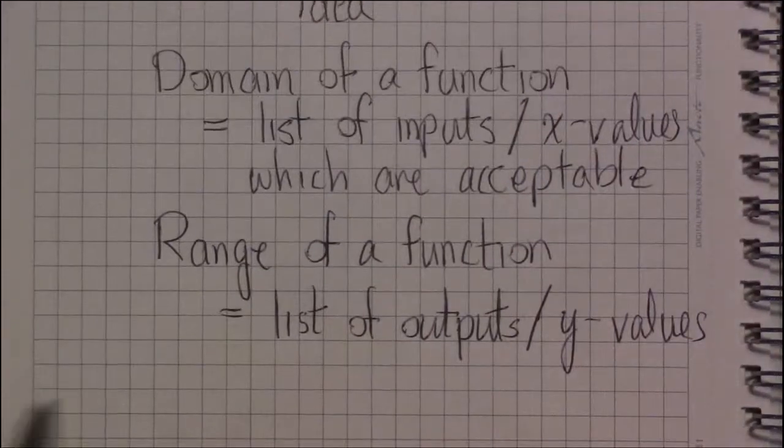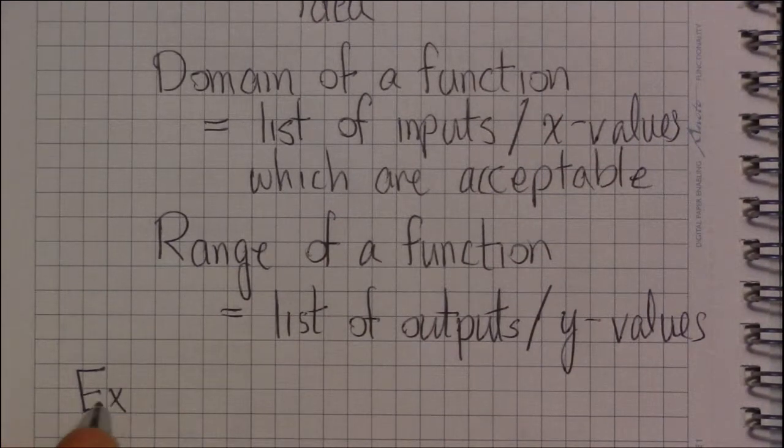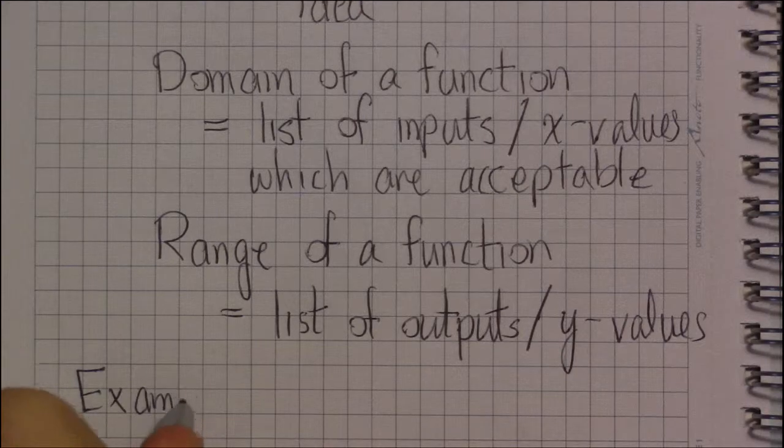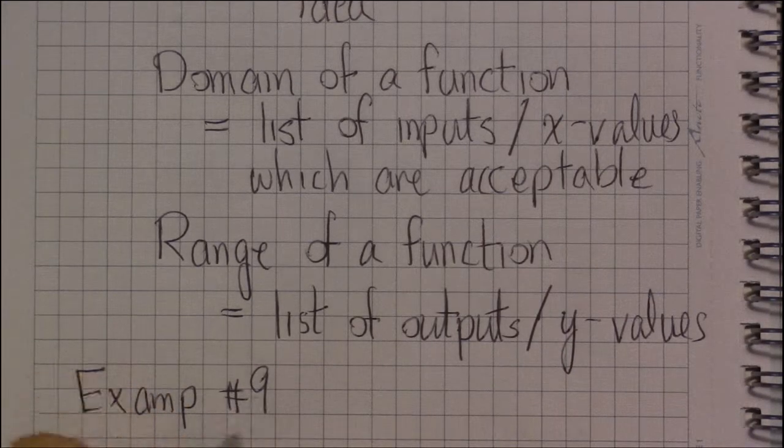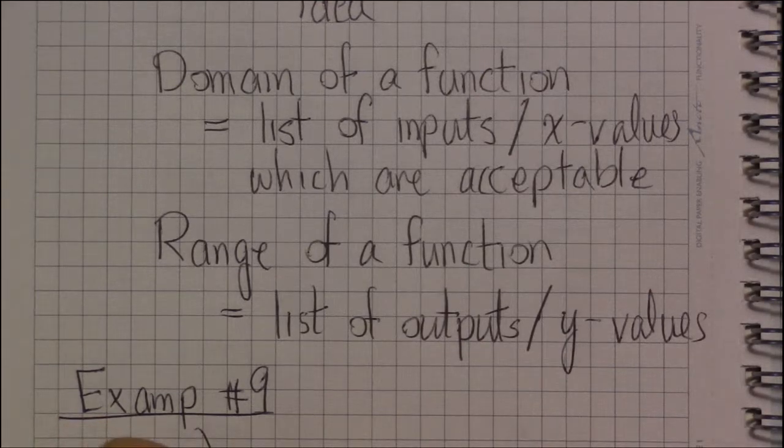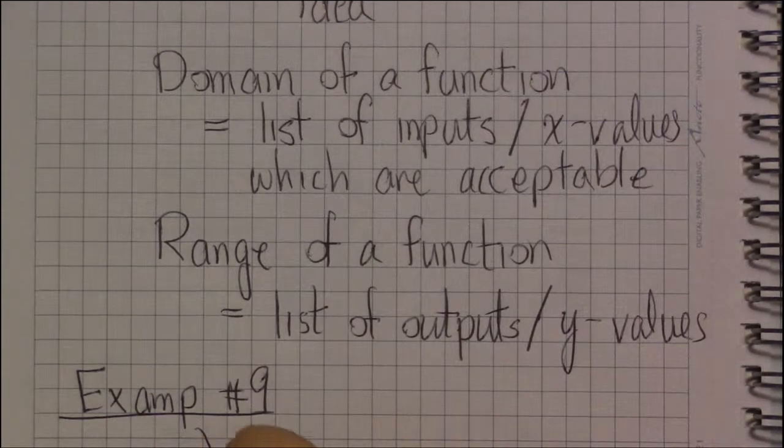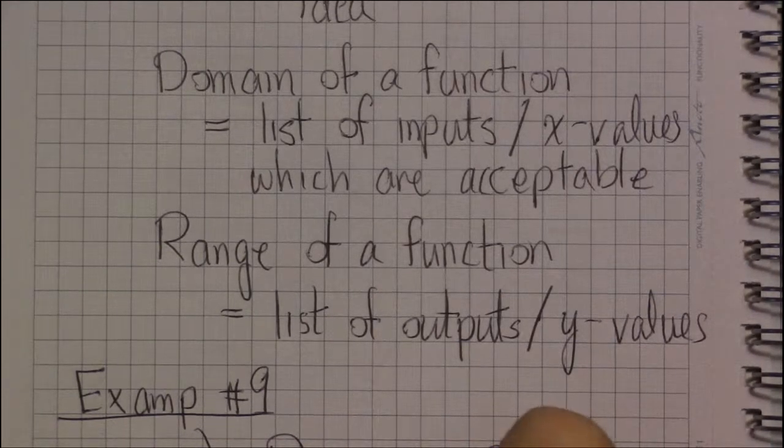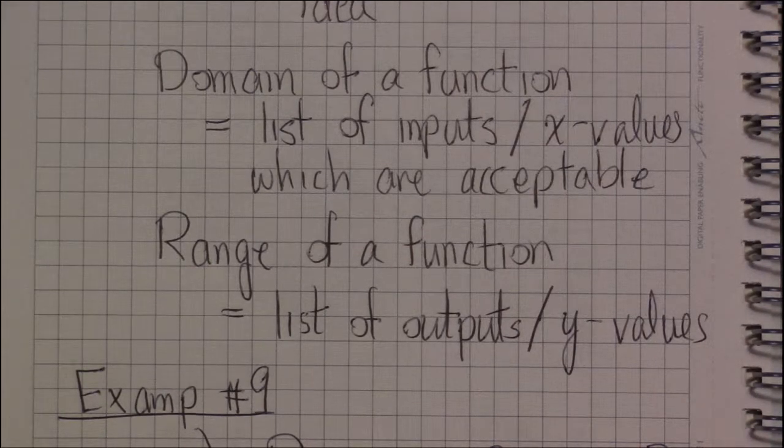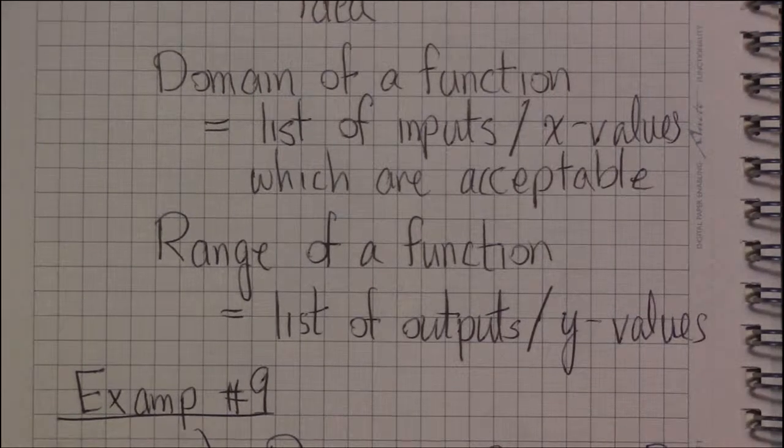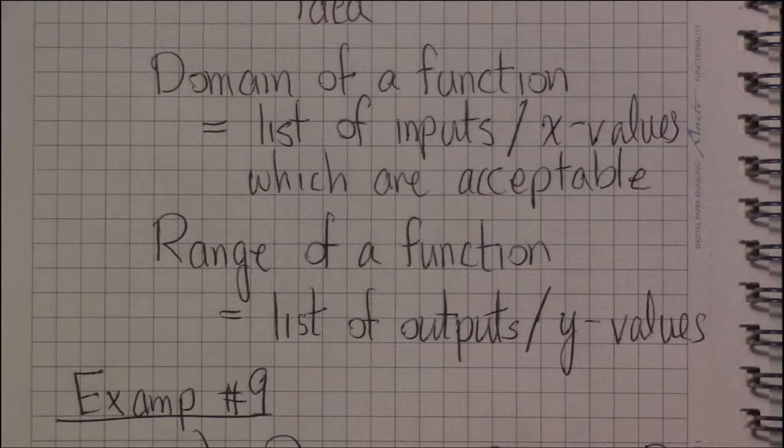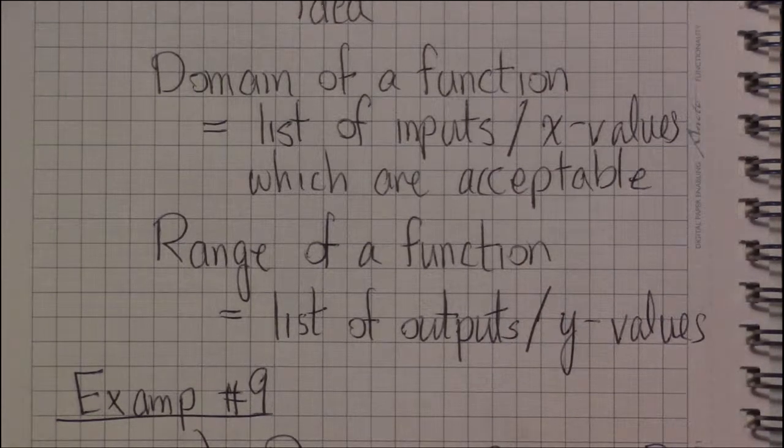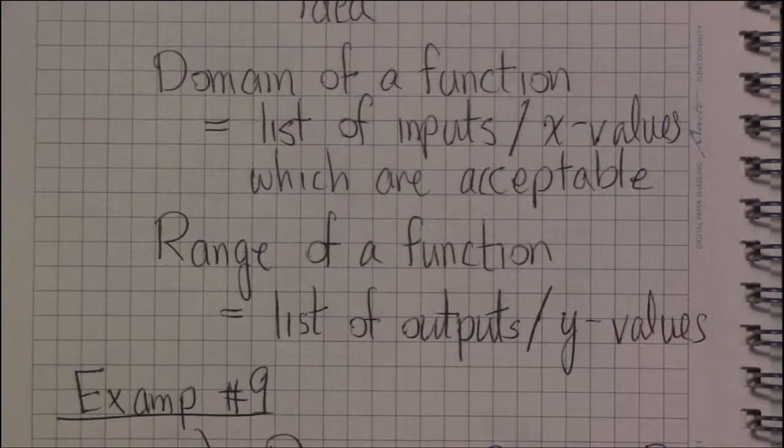for example number 9, part A, the domain is that we can have any x value between minus 2 and 3, including 3. Because when we smash the graph onto the x-axis, what we get is something like this.